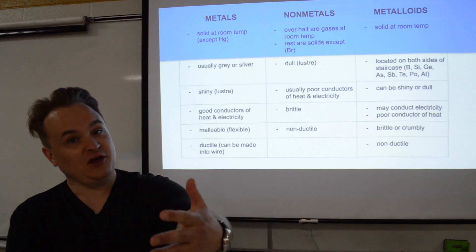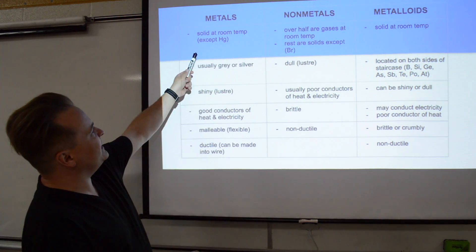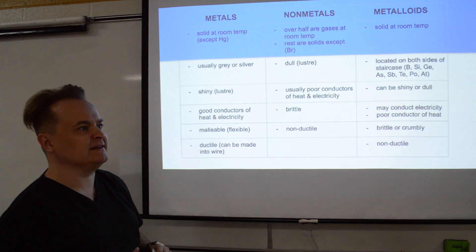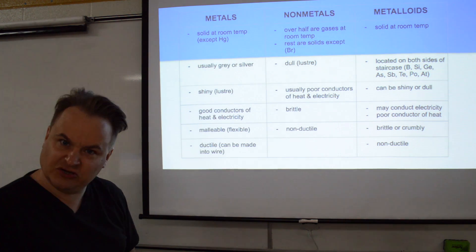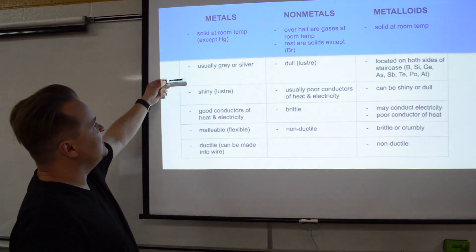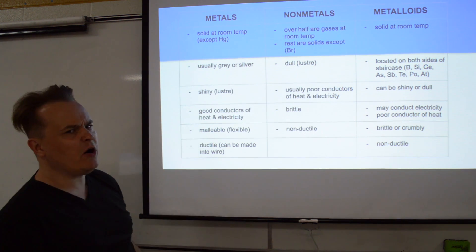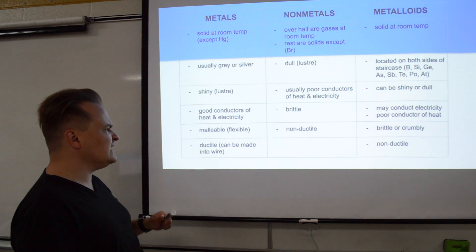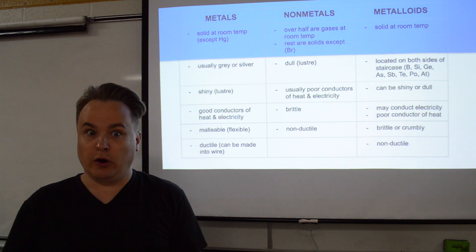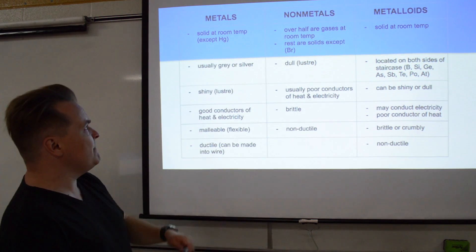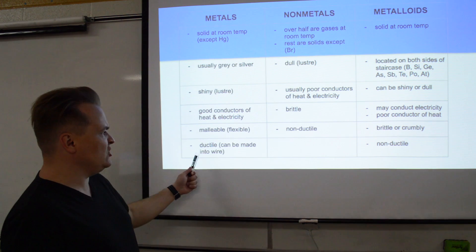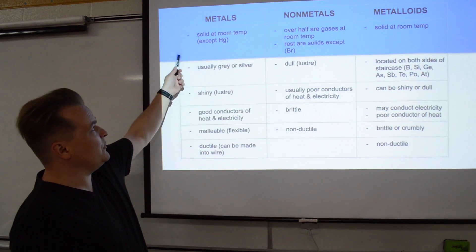I normally make students copy this, but you have the handout, so lucky you. Metals are solid at room temperature, except for mercury — mercury is a liquid metal at room temperature. They're usually gray or silver, they're shiny, they're very good conductors of electricity, they're flexible, and they can be made into wire. This is just common sense — a metal is normally gray or silver, shiny, good at conducting heat and electricity, you can bend it and turn it into wire, and they're solids.